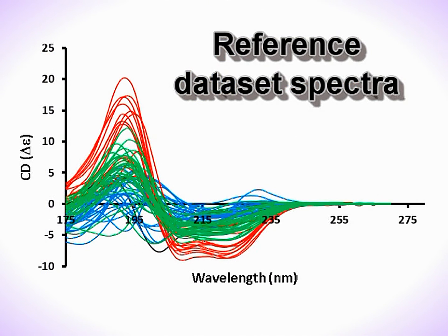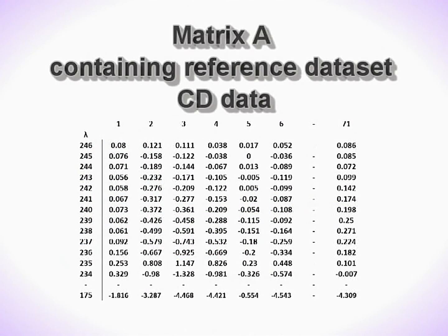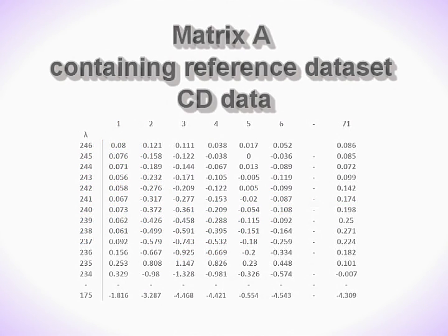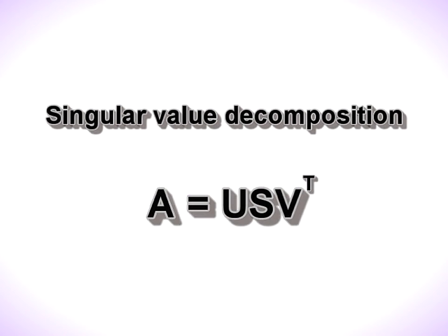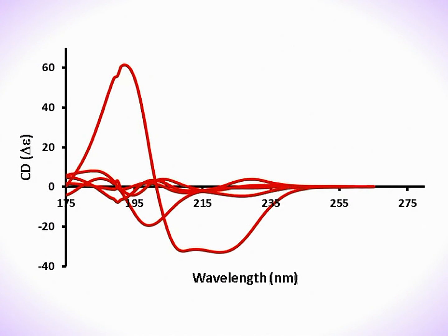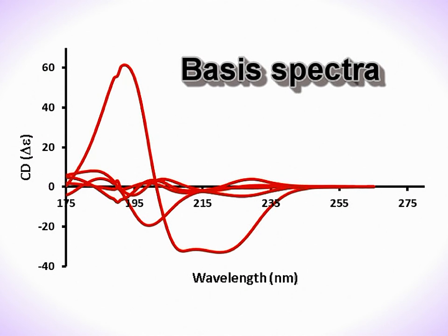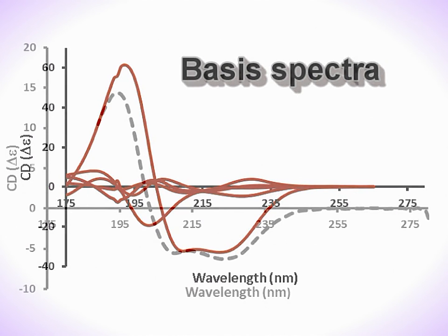A matrix containing the CD spectra of the data set, arranged in columns, is manipulated by singular value decomposition. This is a method by which the data is reduced to a small number of linearly independent vectors that form the curves common to all of the data. We call these the basis spectra.